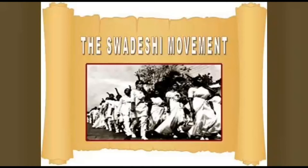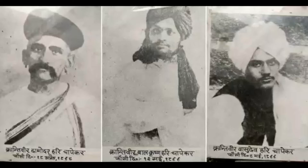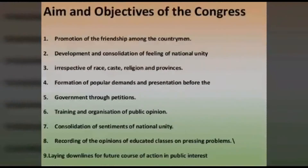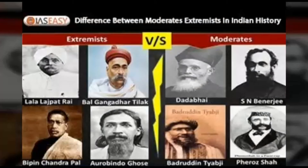Lala Lajpat Rai, Bal Gangadhar Tilak and Bipin Chandrapal were believed to be extremist leaders. In the early period, the extremist leaders were bringing political awakening among the Indians through methods like newspapers, national festivals, and national education. Kesari and Maratha were the newspapers through which Lokmanya Tilak made severe criticism of the suppressive policy of the British. In Bengal province, Amrit Bazar Patrika was a mouthpiece of extremist ideology. By forgetting internal differences, people should come together and exchange their ideas. Common people should get inspiration from the contribution of national personalities. With these objectives, Tilak started organizing Shiv Jayanti and Ganesh Utsav.